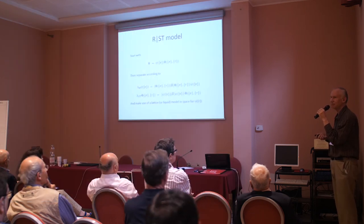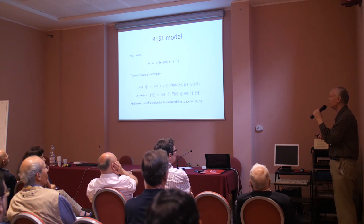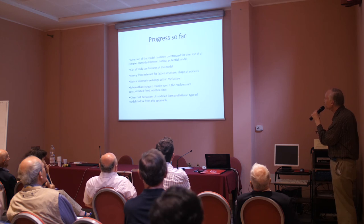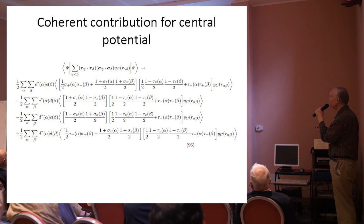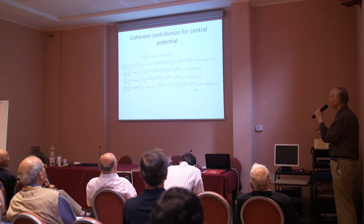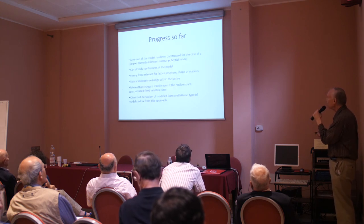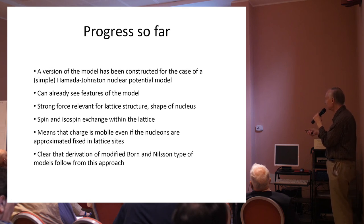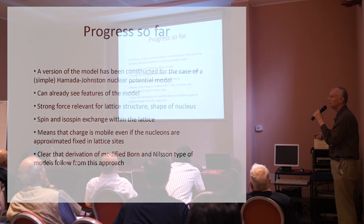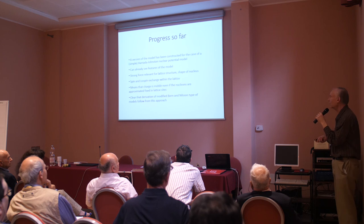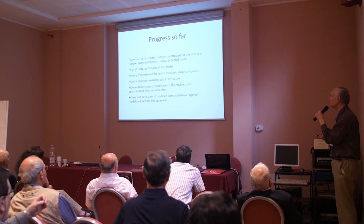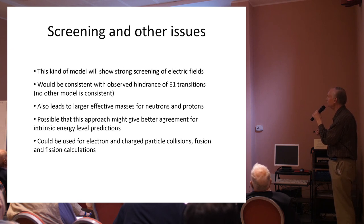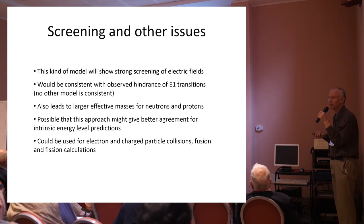As far as I can tell from the literature, this hasn't been studied, and I've dug and looked at all the papers I can find. A rigorous derivation is possible — the formulation is pretty simple. I'm able to reduce a nuclear model straightforwardly. I can already see features in the model: spin-boson or spin-and-isospin exchange happens with the lattice, and I can see I'm going to get a simple derivation of a modified Born-Nilsson type deformed nuclear model — except this one will screen and also have a slightly heavier effective nucleon mass, which will make it much easier to agree with the ordering of nuclear levels. I'm hoping this summer to make some progress on it.